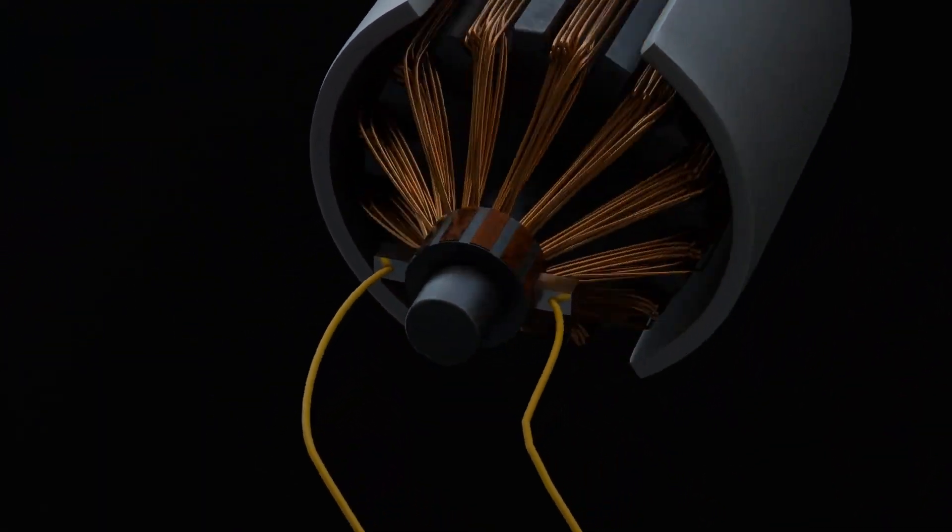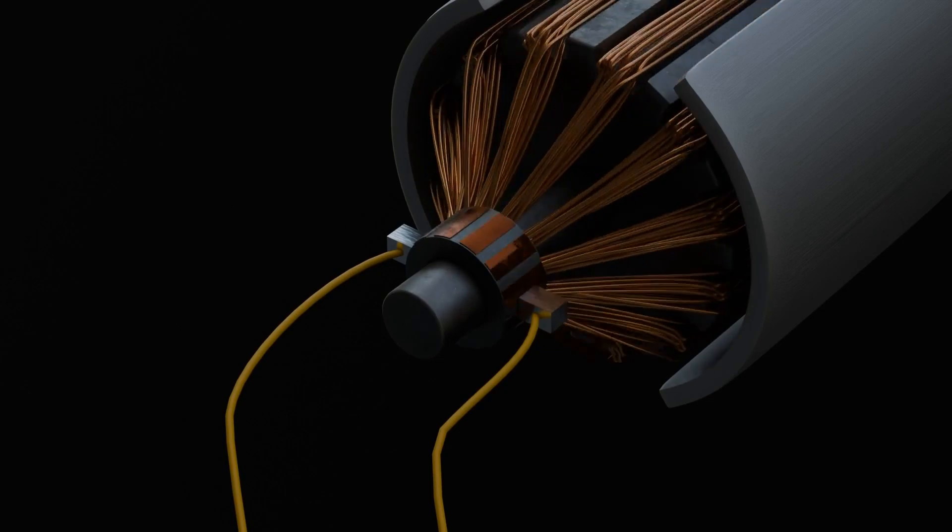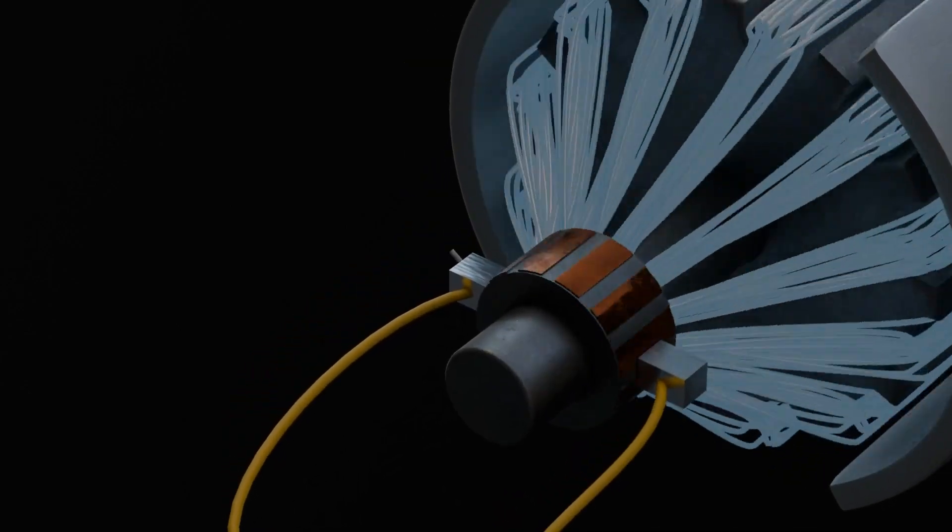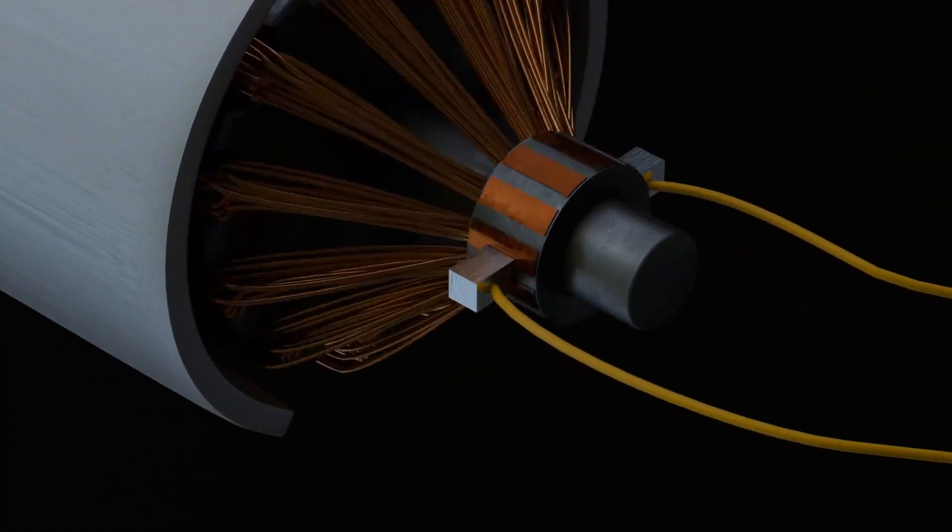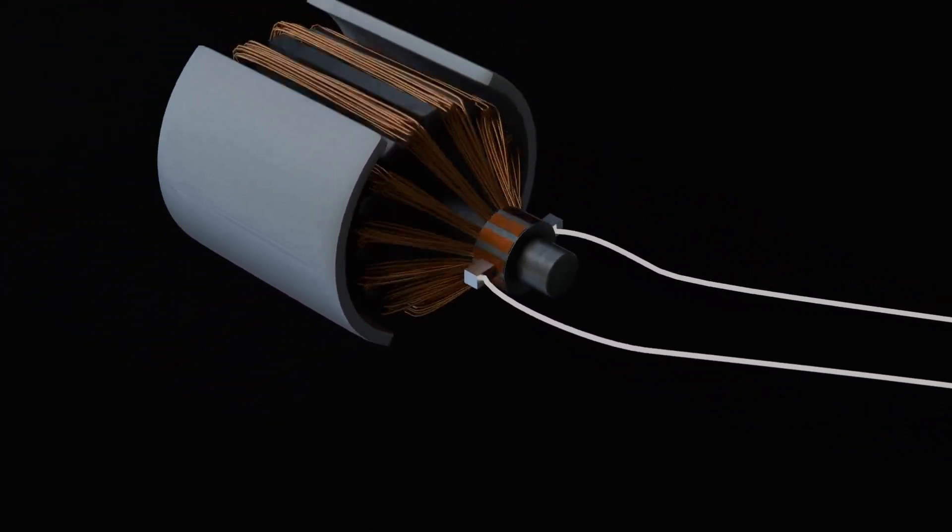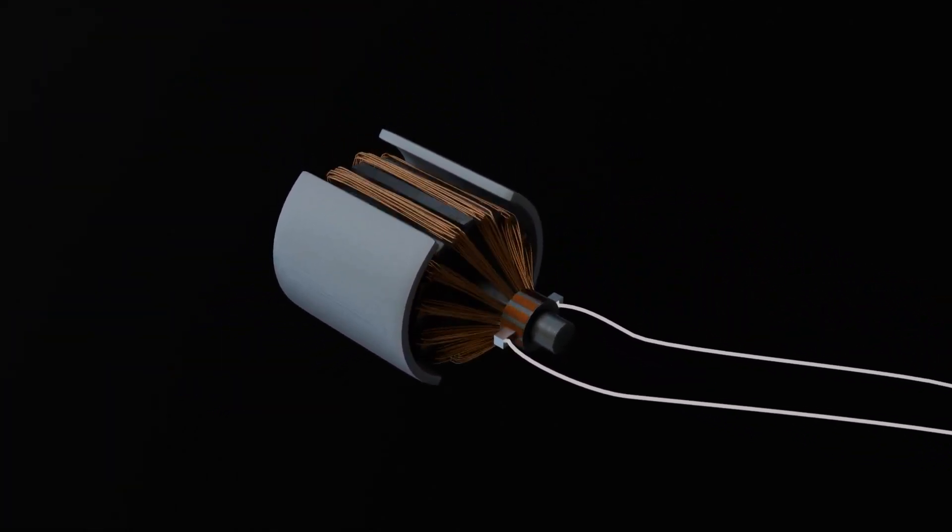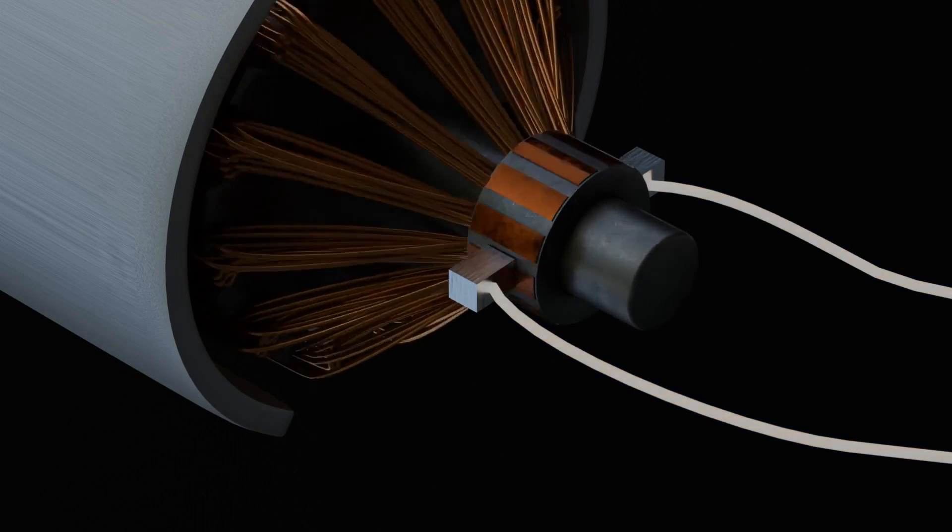In motors with multiple coils, it also switches the current between coils to keep the torque consistent. The commutator connects to the DC power source through stationary brushes made of conductive material that remain in contact with the rotating commutator. This setup allows electricity to flow into the rotating rotor without the brushes themselves moving. When the motor is powered, the magnetic field interacts with the current in the windings, producing a force. The commutator ensures that this force creates a unidirectional torque, enabling the rotor to spin continuously. That's how a DC motor works.